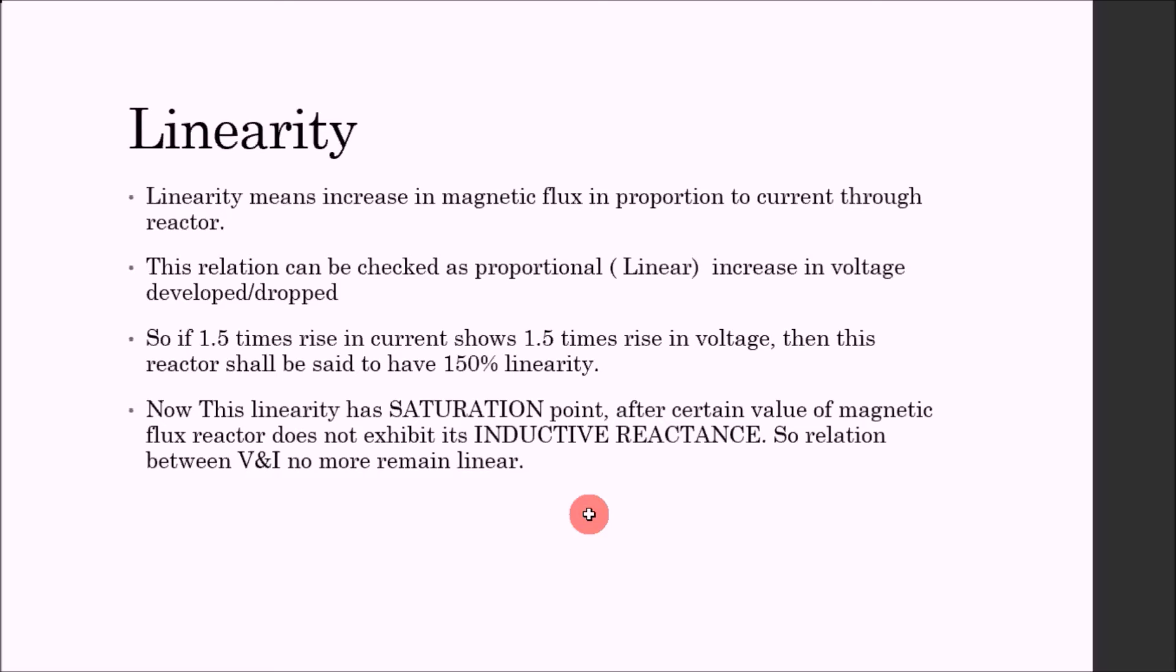When we increase the harmonic current, the voltage drop on the reactor increased from 20 to 25 volts. Now, if 1.5 times rise in current shows 1.5 times rise in voltage, then this reactor shall be said to have 150 percent linearity.